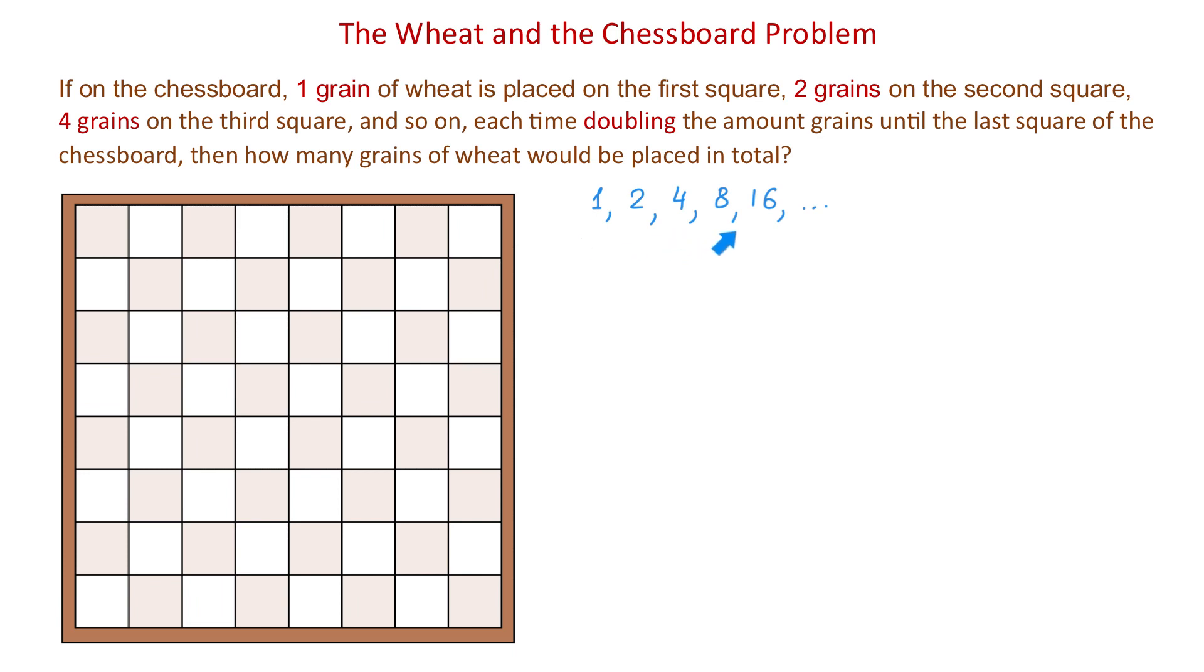What we have here is a geometric sequence because each number after the first is obtained by multiplying the preceding number by the same number 2. That is, 1 times 2 is 2, 2 times 2 is 4, 4 times 2 is 8, 8 times 2 is 16, and so on.